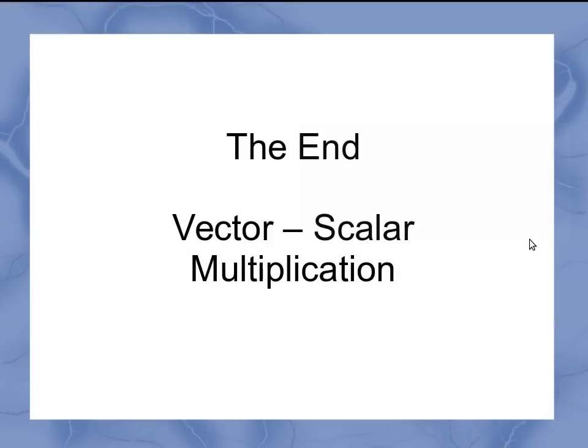So this is how we deal with vector scalar multiplication. Now, the numerical examples I gave you didn't have units. But just keep in mind, just like our regular multiplication, if there were units on those scalars and vectors, not only does the number multiply through, but the units are going to multiply through as well.